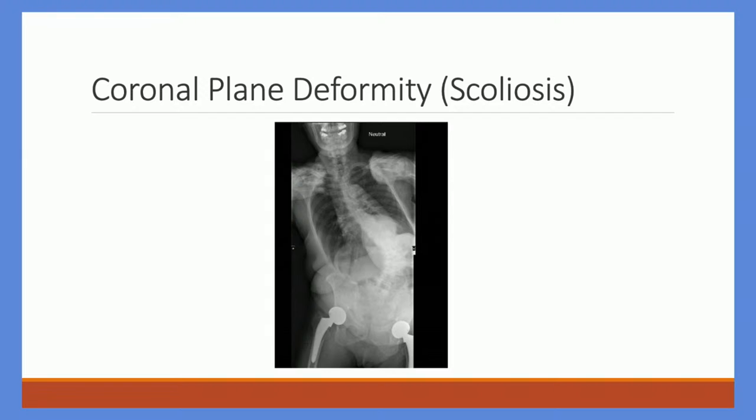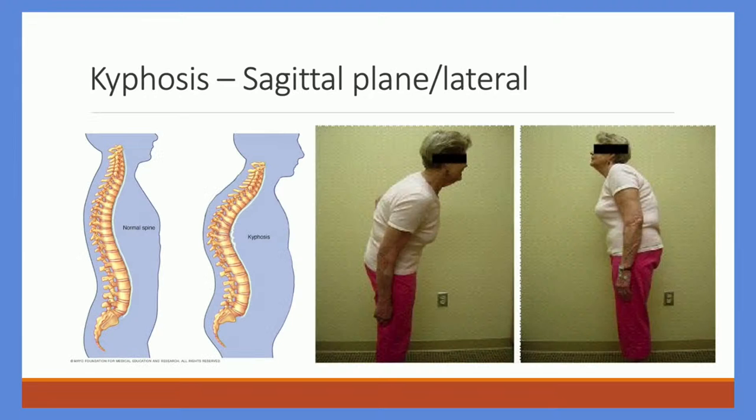This is a patient from my clinic who has a coronal plane deformity — a significant curvature in the coronal plane — and it is also fair to assume, although not pictured here, that the patient had a significant sagittal plane deformity as well. This is an example of a patient with kyphosis, also called flat back syndrome, viewed through the sagittal or lateral plane.